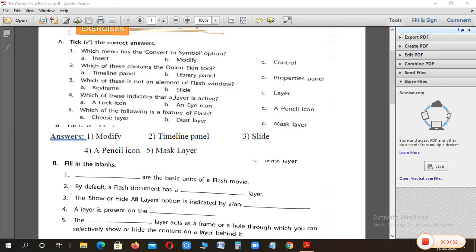Which of these indicates that a layer is active? The lock icon indicates that the layer is locked or unlocked. The eye icon indicates that you show or hide. The pencil icon indicates that this layer is active. If the pencil tool is shown, means layer is active. If the pencil doesn't show, means layer is not active.